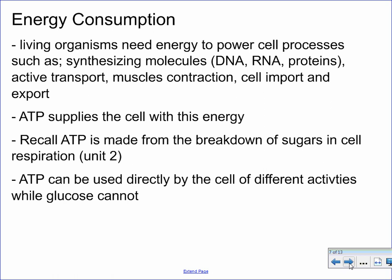Living organisms need energy to power cell processes. Energy goes towards things such as synthesizing molecules like DNA, RNA, or proteins, and is involved in active transport, muscle contractions, cell imports and exports, exocytosis, and endocytosis — all energy-dependent processes. It is ATP that ultimately supplies the cell with this energy. ATP is made from the breakdown of sugars through glycolysis, the Krebs cycle, and the electron transport chain — all involved in cell respiration, covered in Unit 2. ATP can be used directly by the cell for different activities, while glucose cannot. Glucose holds the energy; ATP supplies it.